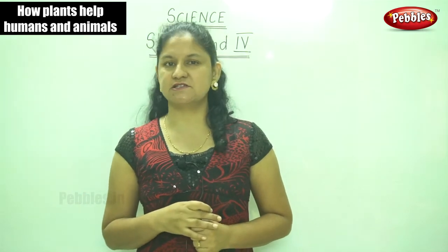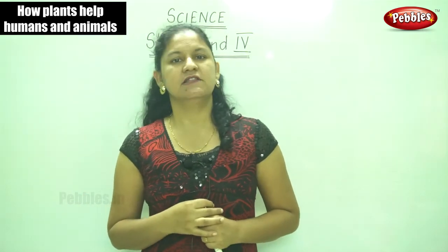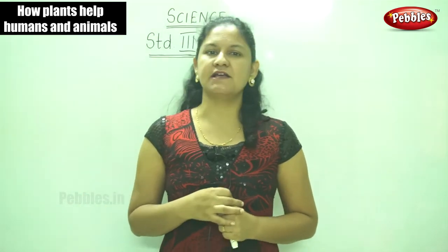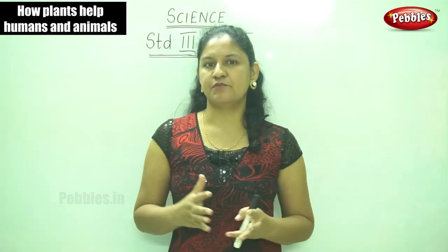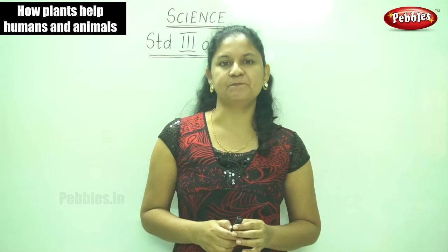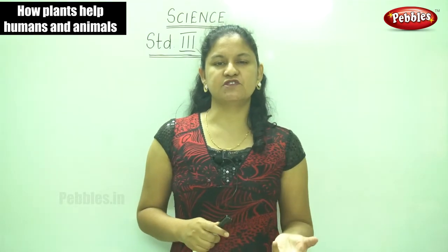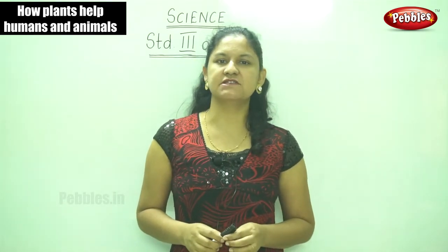The part that grows under the ground is the roots, and the part that lies above the ground is the shoot. The shoot bears the different branches, leaves, flowers, fruits, buds, etc. The roots absorb water and minerals from the soil.